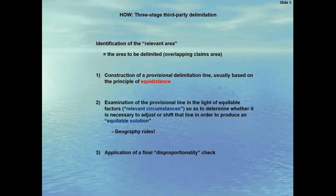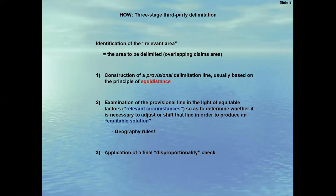These three elements are reflected in a three-stage methodology developed by the case law. The court starts by determining the relevant area, identifying the geographical context of the delimitation. That includes relevant coasts formed by projecting coastal frontages that overlap, as well as protrusions and offshore features such as islands. Then the court will establish a provisional line, typically but not always by drawing an equidistance line between adjacent coasts — as in this case — or a median line between opposite coasts. The key issue is typically not how to draw the line, but where to draw it from: that is, what is the land terminus point. Rob will show the issues with the land terminus point and the equidistance line.